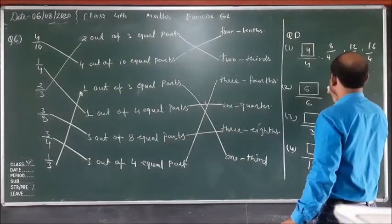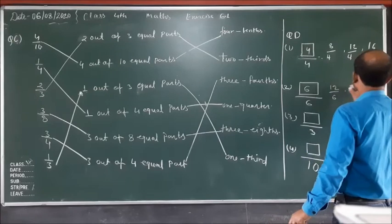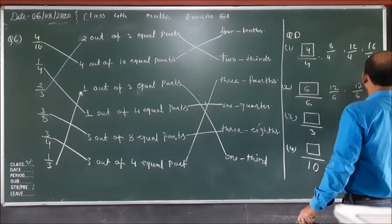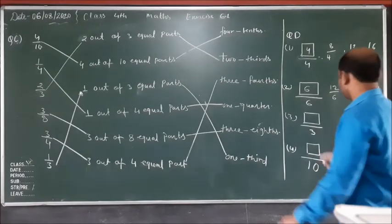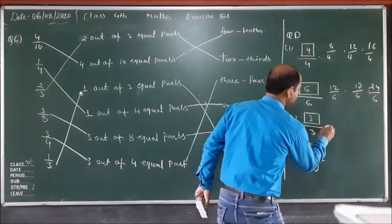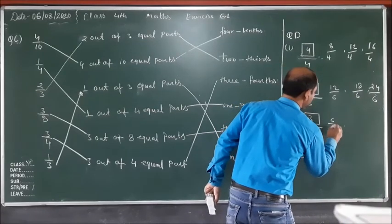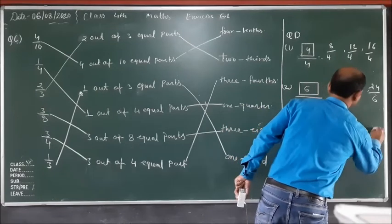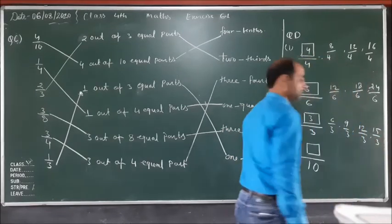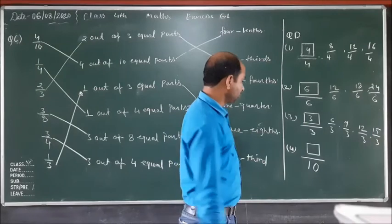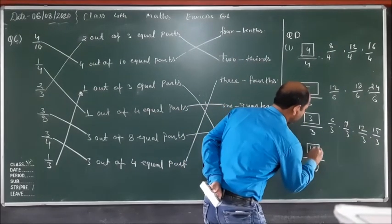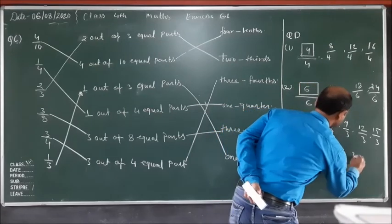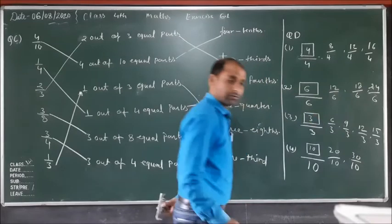To make a whole, if the denominator is six, the numerator must also be six — six upon six equals one whole. Similarly: three upon three, six upon three, nine upon three, twelve upon three, fifteen upon three. For denominator ten: ten upon ten, twenty upon ten, thirty upon ten all equal whole numbers.